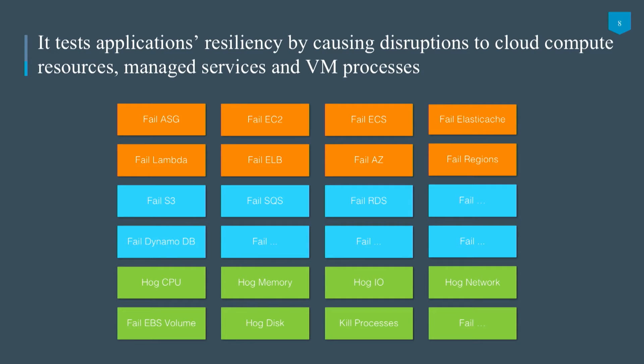Looking at the different features — these are all AWS and some Linux-based instance-level disruptions. We have ASG, EC2, ECS, and ElastiCache implemented at the managed service level in our first MVP. At the instance level, we've implemented CPU, memory, and IO. Each of these is one Lambda function. There are also core Lambda functions handling database access and the approval workflow — we need that workflow so developers can't start disrupting a production server without the business owner knowing about it.